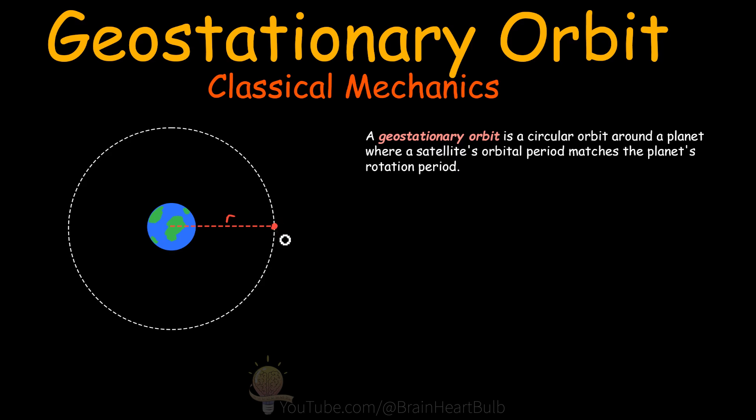So our satellite here is undergoing uniform circular motion. This means it has a constant velocity along this circular path here. It's not accelerating or decelerating along this path. Because its orbital acceleration is zero, we know that its centripetal acceleration is equal to v squared over r.